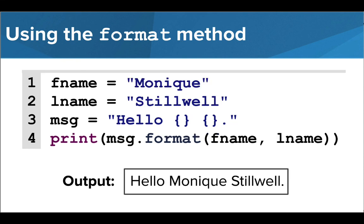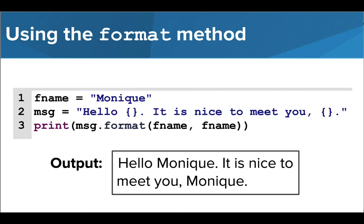To include multiple pieces of information, we still enter curly brackets wherever we want the variable's information to go, and if we want to use multiple variables to fill in the information, we just enter each one in order inside the parentheses. We can also use the same variable multiple times in the message if we'd like by referencing it multiple times in the format method.